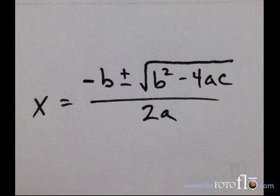x equals negative b plus or minus the square root of b squared minus 4ac all over 2a.